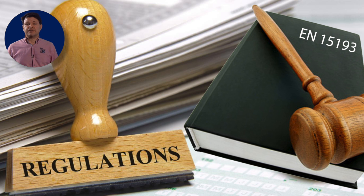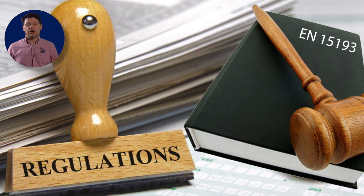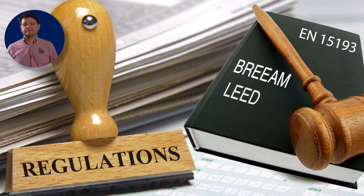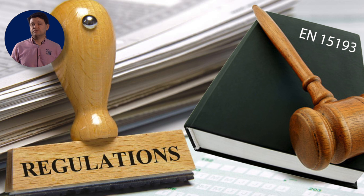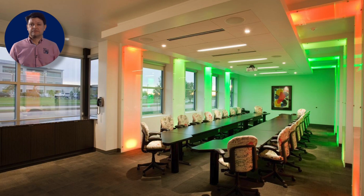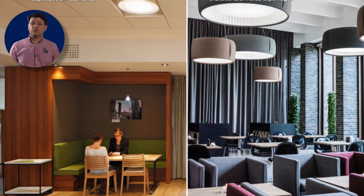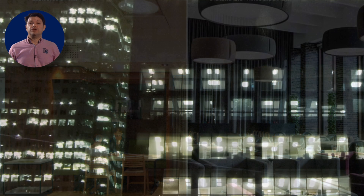An example of regulation is the European EN 15193. Others are BREEAM and LEED. In the future, all lighting will be fitted with either automatic or manual control. Most will also be able to be dimmed. When you think about lighting, remember the controls, and remember that when you use lighting wisely and save energy, you improve the world around you in the process.